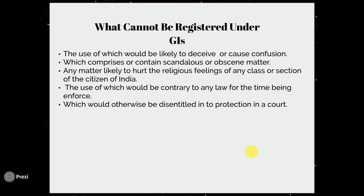What cannot be registered under GIs? First, any indication the use of which would be likely to deceive or cause confusion. Second, any indication which comprises or contains scandalous or obscene matter. Third, any matter likely to hurt the religious feelings of any class or section of citizens of India. Fourth, any indication whose use would be contrary to any law for the time being enforced, or which would otherwise be disentitled to protection in a court — meaning anything which cannot be protected in a court cannot be registered under Geographical Indication either.